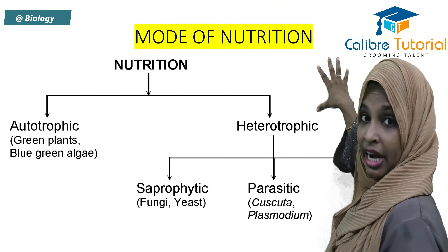Similarly, when I talk about heterotrophic — hetero means other, meaning it depends on another. We, living organisms — especially human beings — we are heterotrophic. Why are we heterotrophic? Because we depend on another for survival. All the omnivores, all the carnivores, they all depend on another for their survival. So children, if I further classify heterotrophic — it is divided into three categories: saprophytic, parasitic, and holozoic nutrition.